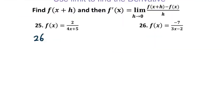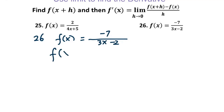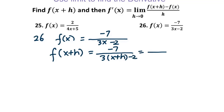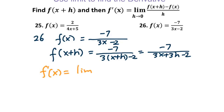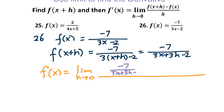Now let's go to problem 26. f(x) = -7 over (3x - 2). First, we find f(x + h) by replacing every x with x + h, giving -7 over (3(x + h) - 2). Using the distributive property, the denominator becomes 3x + 3h - 2. We plug into the derivative formula: the limit as h approaches 0 of [(-7/(3x + 3h - 2)) minus (-7/(3x - 2))] over h.